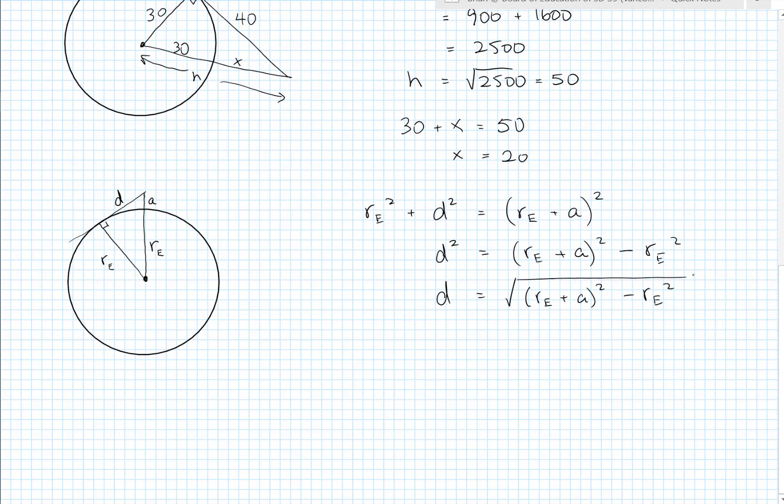So now we have everything we need. We can plug all this into a calculator if we just know the actual values to plug in. And for the purposes of this problem, let's say the radius of the earth is 6,378.1 kilometers.